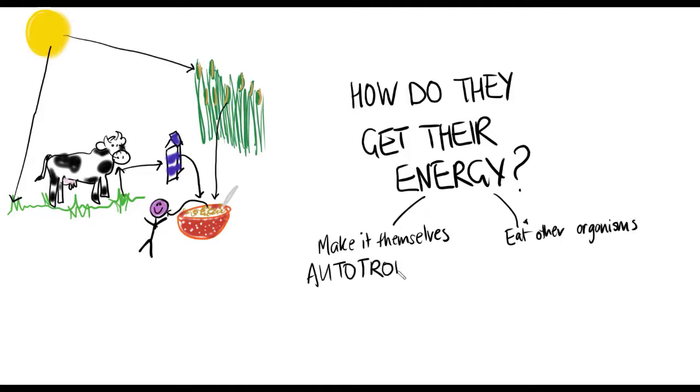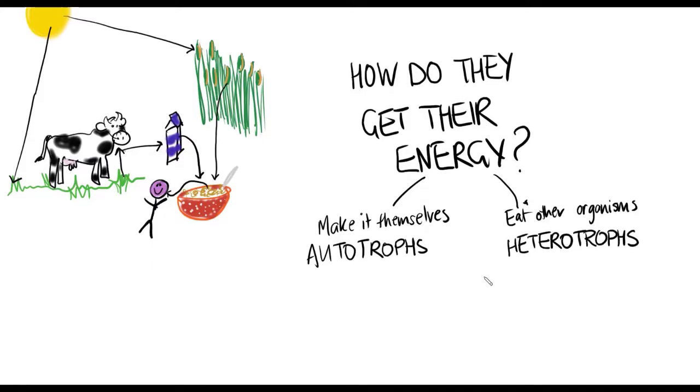So we call these two groups autotrophs and heterotrophs. Auto means self. Troph sounds like trophy but it actually means nourishment or food. So imagine winning a treat.